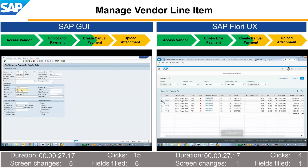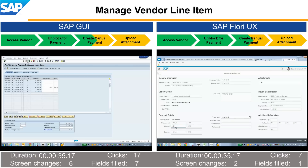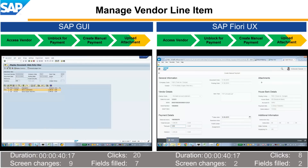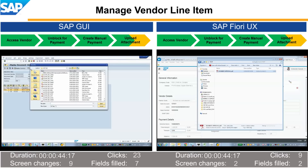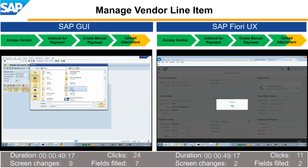To process the invoice, the accountant triggers the payment by clicking the Action button to create a manual payment. Much of the required information populates automatically, and the accountant needs only to adjust the payment amount. Then, by using the drag-and-drop feature, the accountant attaches the payment approval and presses the Create button to post the payment.